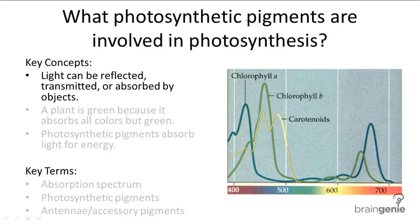Solid objects either absorb or reflect the light, and it's the reflected light that shows up on the surface of an object. So a banana is yellow because it absorbs all the colors but yellow — it reflects yellow. An apple is red because it absorbs all the colors but red. This may seem counterintuitive, but think of a mirror: a mirror reflects images by reflecting the light sent to it; it doesn't absorb that light.